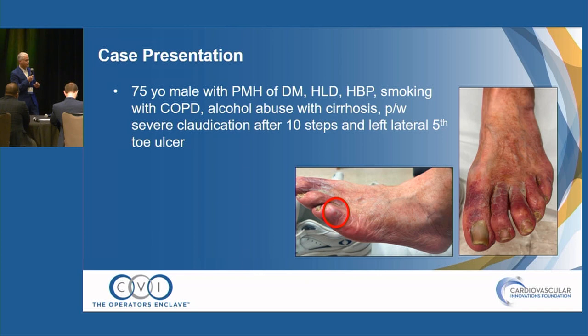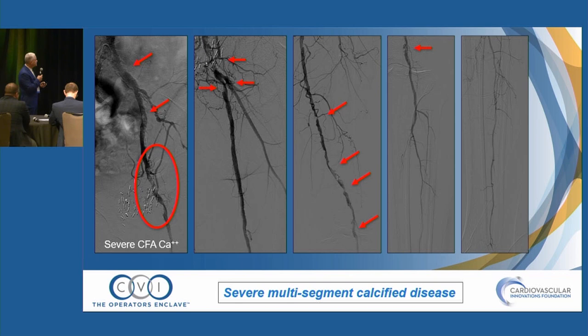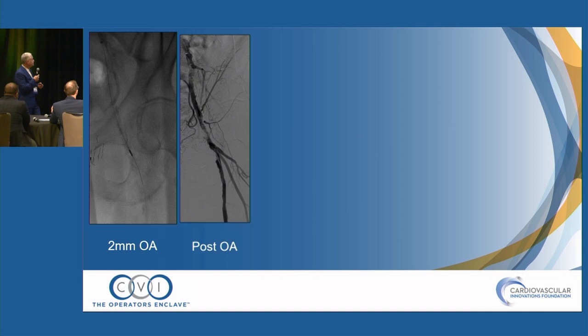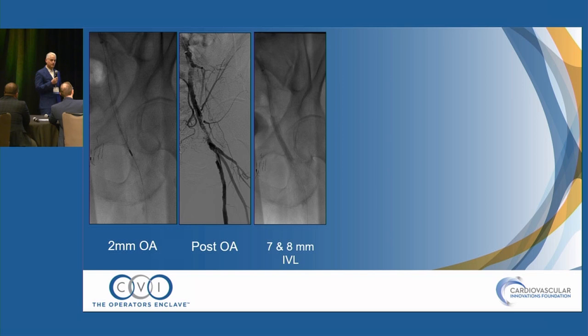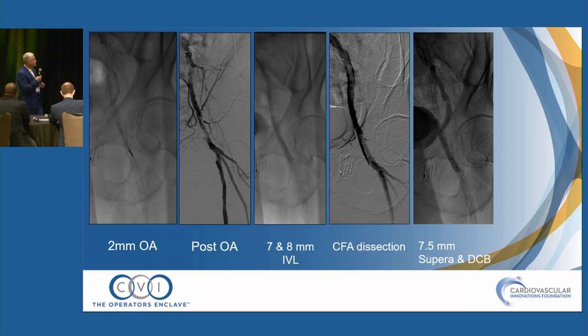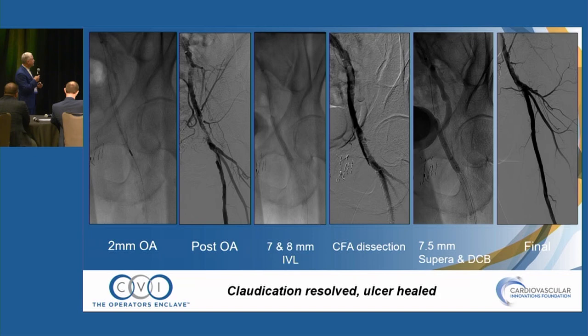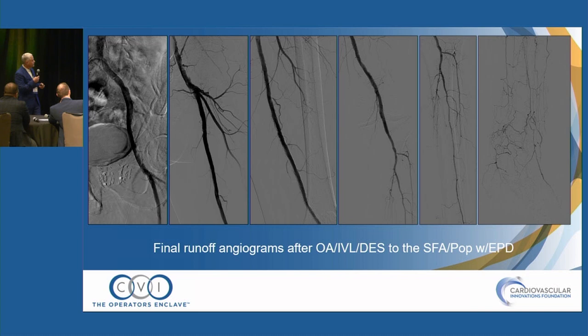Here's a case from earlier this year — a gentleman with lots of comorbidities, a terrible operative candidate, with a small ulcer and rest pain. Severe, nasty calcification, with terribly calcified femoral popliteal vessels and basically single vessel runoff. We made a pilot channel with orbital followed by 7mm and then 8mm IVL balloons. That did result in a dissection we handled with a 7.5mm Supera device. His claudication resolved and his ulcer healed. We also addressed his femoral popliteal disease and restored inline flow to the foot via the peroneal.